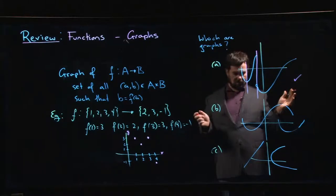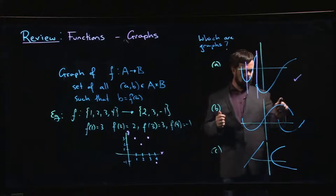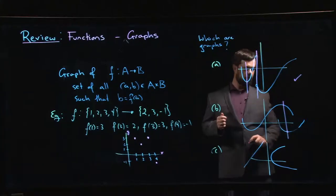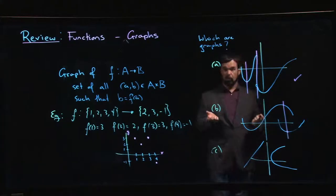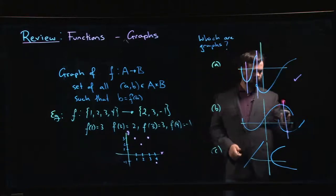Even though this graph comes in two pieces that are not connected. Standard example that people usually give for a curve that is not a graph of a function is a circle. A circle fails this vertical line test.